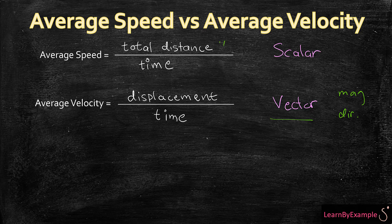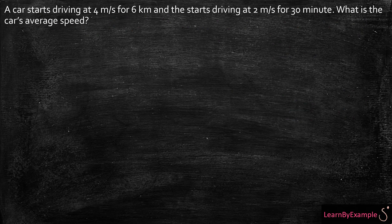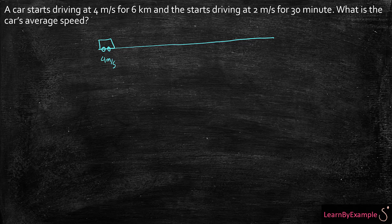You already know the difference between these two, so I'm not going to go through that. What I'm going to do is show you how to calculate the average speed. Let's take a look at this question: a car starts driving at 4 meters per second for 6 kilometers. The first thing I want to do for any kinematic question is to have a clear picture of the situation and what's happening.